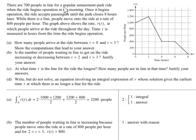There are 700 people in line for a popular amusement park ride when the ride begins operation in the morning. Once it begins operation, the ride accepts passengers until the park closes eight hours later. While there is a line, people move onto the ride at a rate of 800 people per hour. The graph above shows the rate R(t) at which people arrive at the ride throughout the day. Time t is measured in hours from the time the ride begins operation.